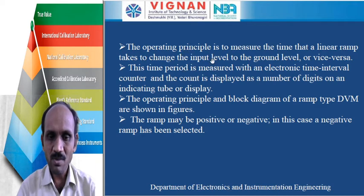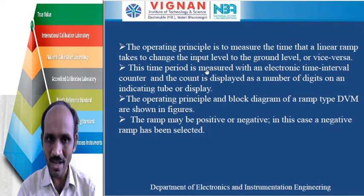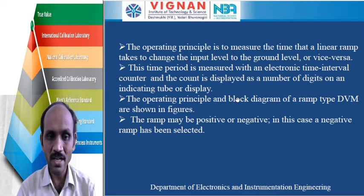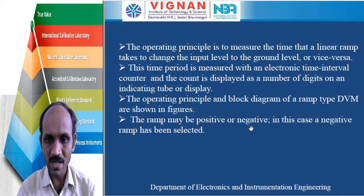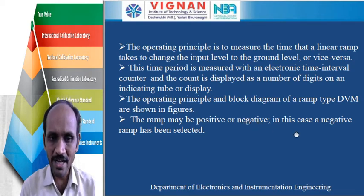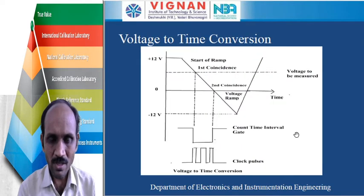The operating principle is to measure the time that a linear ramp takes to change from the input level to the ground level, or vice versa. This time period is measured with an electronic time interval counter and the count is displayed as a number of digits on an indicating tube or display. The ramp may be either positive or negative; in this case we are taking the negative ramp.